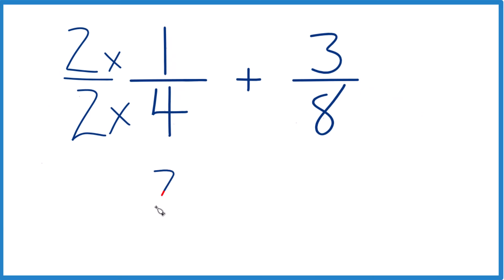Now, 2 times 1 is 2. 2 times 4 is 8. And 2 8ths, that's the same thing as 1 4th. They're equivalent fractions.